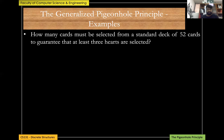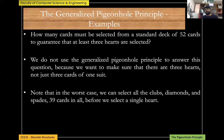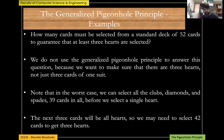With 42 cards selected, there is no scenario where fewer than three hearts are drawn. The formal answer: in the worst case, we select all clubs, diamonds, and spades — 39 cards — before selecting a single heart. The next three cards will all be hearts. So we need to select 42 cards to guarantee at least three hearts. Note: we do not use the generalized pigeonhole principle here because we want specifically three hearts, not three of any suit.